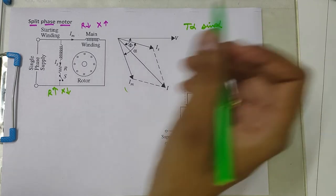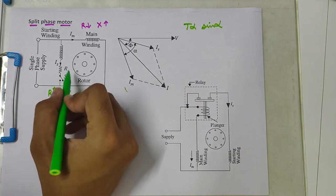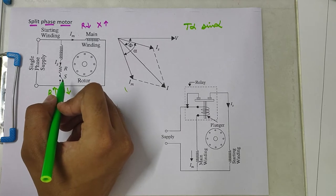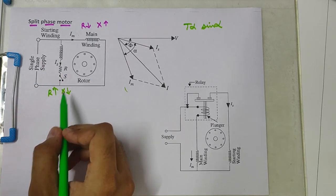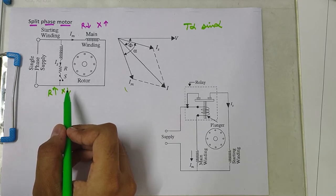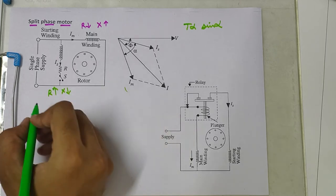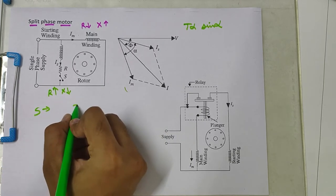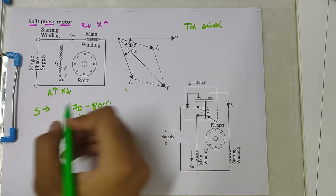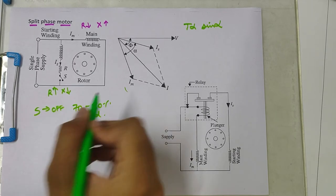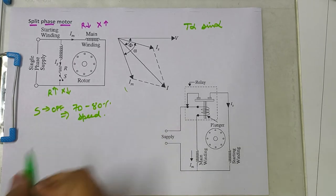A centrifugal switch is connected in series with the winding and is located inside the motor. Its function is to automatically disconnect the winding from the supply when the motor reaches up to its 70 to 80% of speed. So at 70 to 80% of speed this switch will be off.